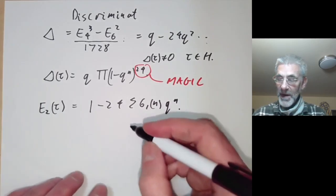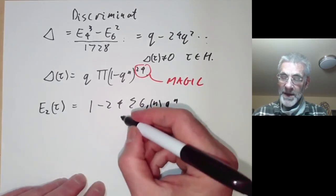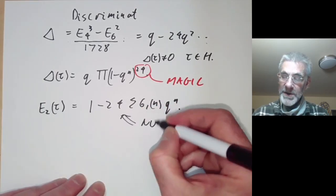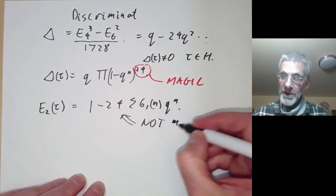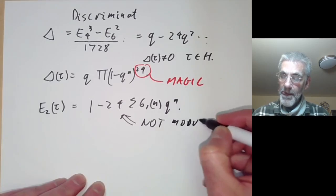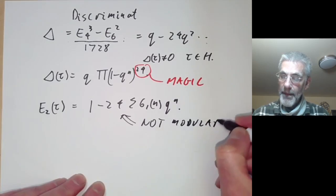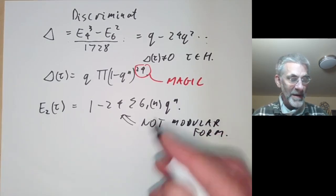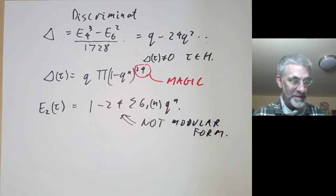However, E2 is not a modular form, for reasons I'll explain in a moment.